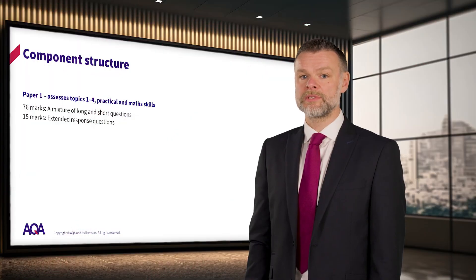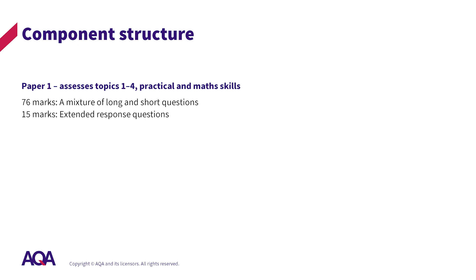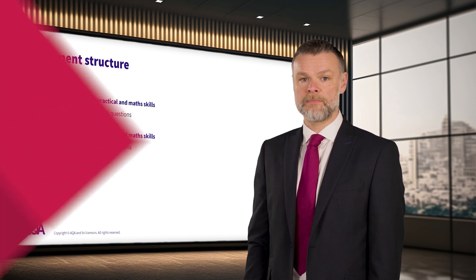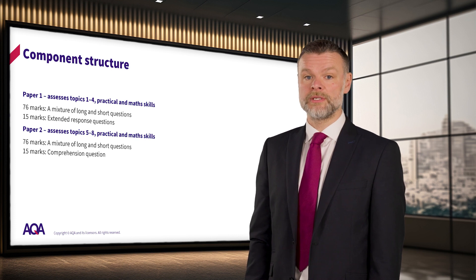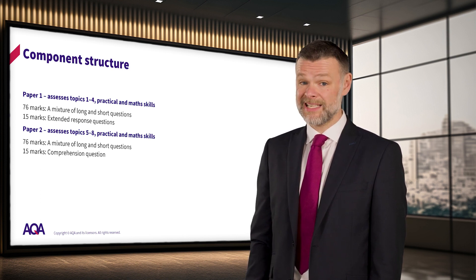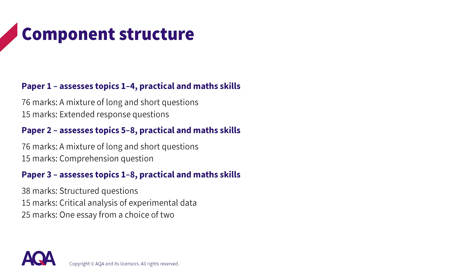On top of the practical and maths requirements of each paper, paper 1 assesses only the first four topics of the specification in two broad sections. The first 76 marks are a mixture of long and short questions. The last question is worth 15 marks in total and is made up of AO1 extended response parts. Paper 2 assesses only the last four topics of the specification in two broad sections. The first 76 marks are a mixture of long and short questions. The last question is worth 15 marks in total and is a comprehension question. The writing of a comprehension is quite a skill in itself. To make it a true comprehension, every question that follows must only be answerable as a result of the student having read and understood the passage in the stem of the question. And to be accessible, that passage must contain clear information with nothing extraneous.